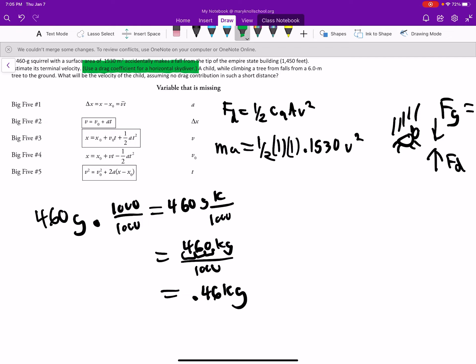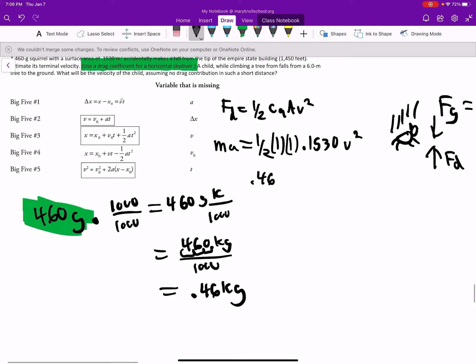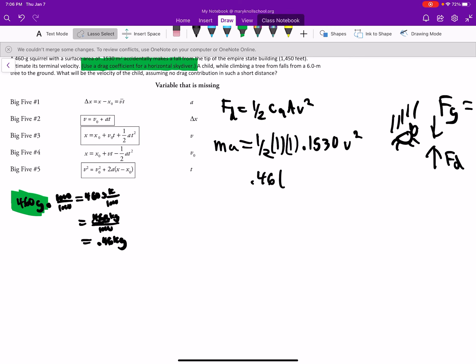And you could also just, just kind of memorize it. Just say, in order to move from grams to kilograms, we just move it over the decimal place over three times. So that's just another way to do it too. So, so the mass is 0.46 multiplied. Okay, so I'm bringing the mass down. So that's 0.46 kilograms. Acceleration due to gravity is 10, we're on earth. And then one half multiplied by 0.1530. Let's go ahead and do that.